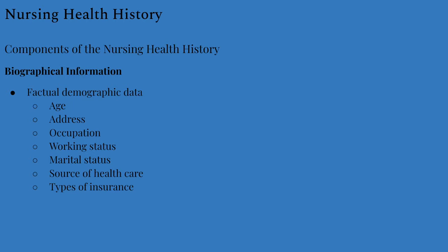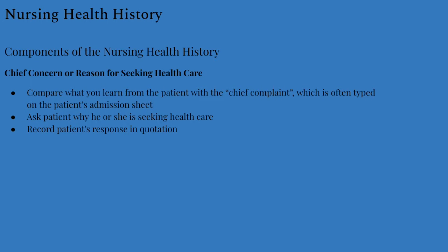Biographical information is usually collected by the admitting office, but if not, you'll collect factual demographic data such as age, address, occupation, working status, marital status, source of health care, and insurance type. Your patient's chief complaint is usually on the admission sheet — a concise statement describing symptoms, problems, condition, diagnosis, and reasons for seeking care. You should still ask the patient why they're seeking care and record their response in quotation marks, then compare it to the chief concern on the admission sheet.